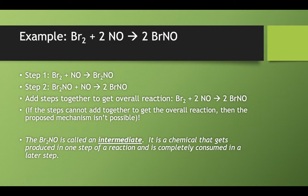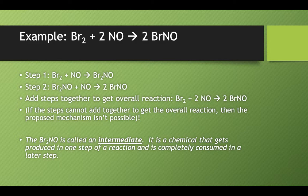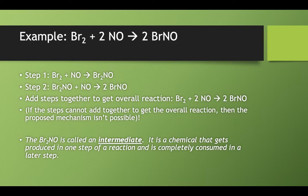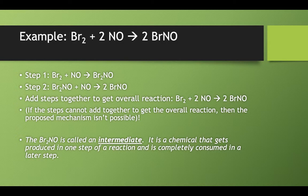What probably happens is a series of smaller steps. And what we can do is add those smaller steps together to get our overall reaction. If we took Br2 and added it to nitrogen monoxide, we could get a compound Br2NO. That Br2NO could then go on to react with another nitrogen monoxide to make our final product, two BrNO.